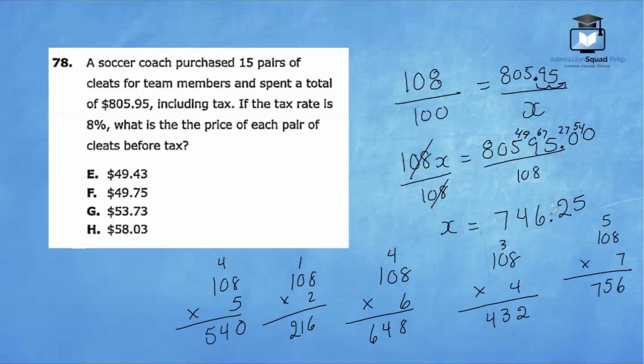And that's going to be five because 108 times five - let's take a look. Five times eight is 40, put the zero, carry the four. Five times zero is zero plus four is four and five times one is five. So this is the cost of 15 cleats before tax. So we still have one more step.